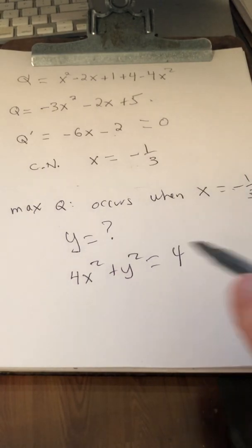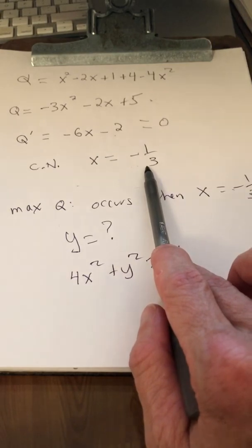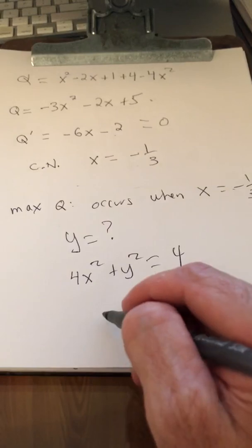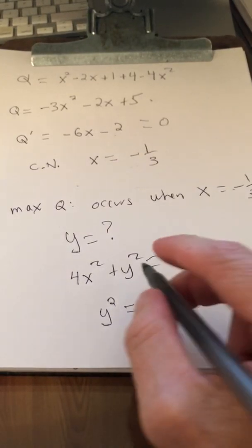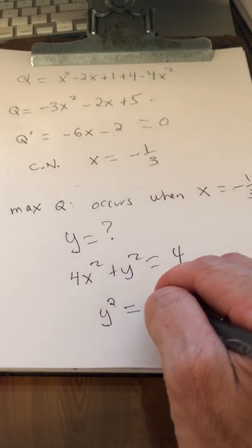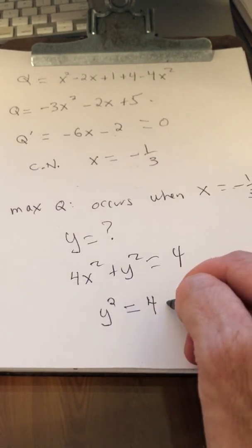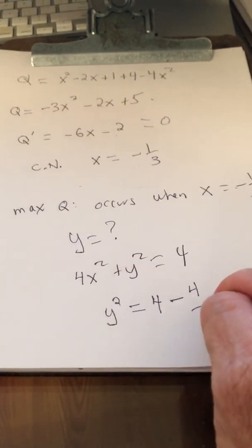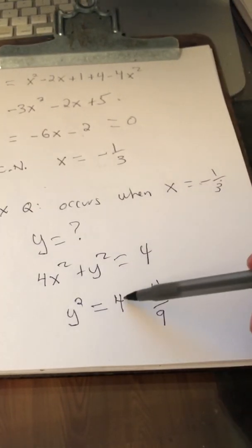Well, if x is negative 1/3, x squared is 1/9. So y squared is 4 minus 4/9.